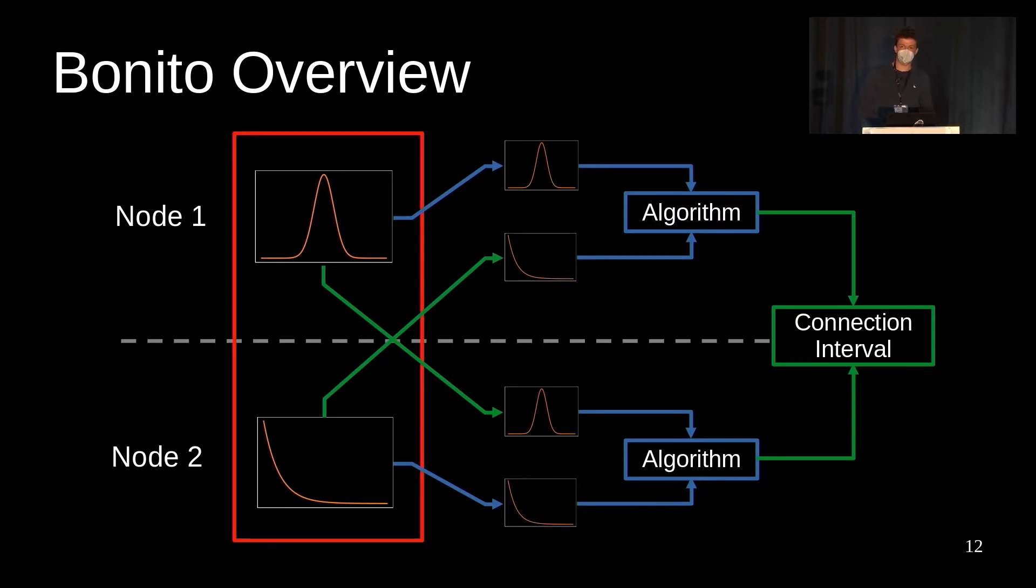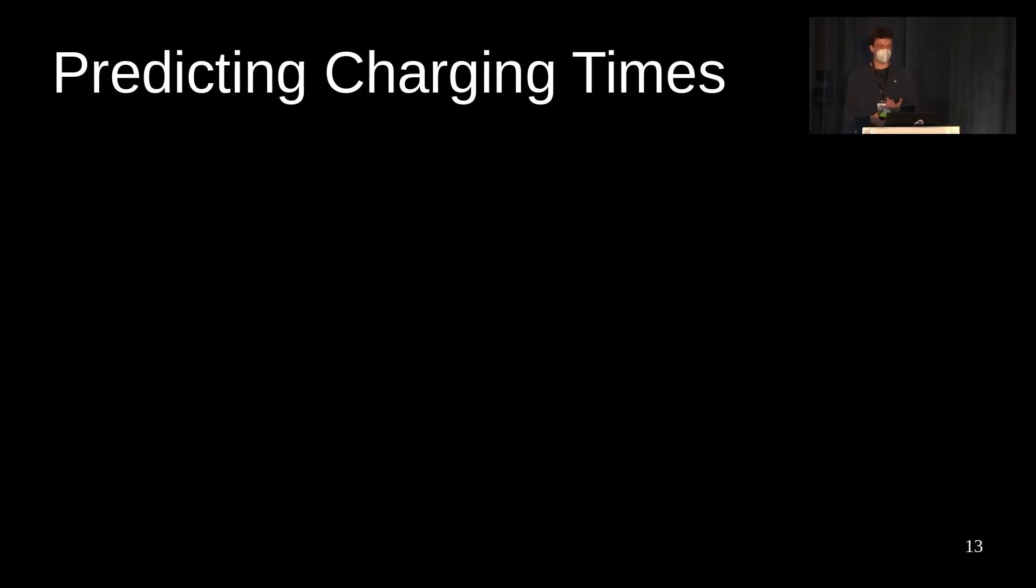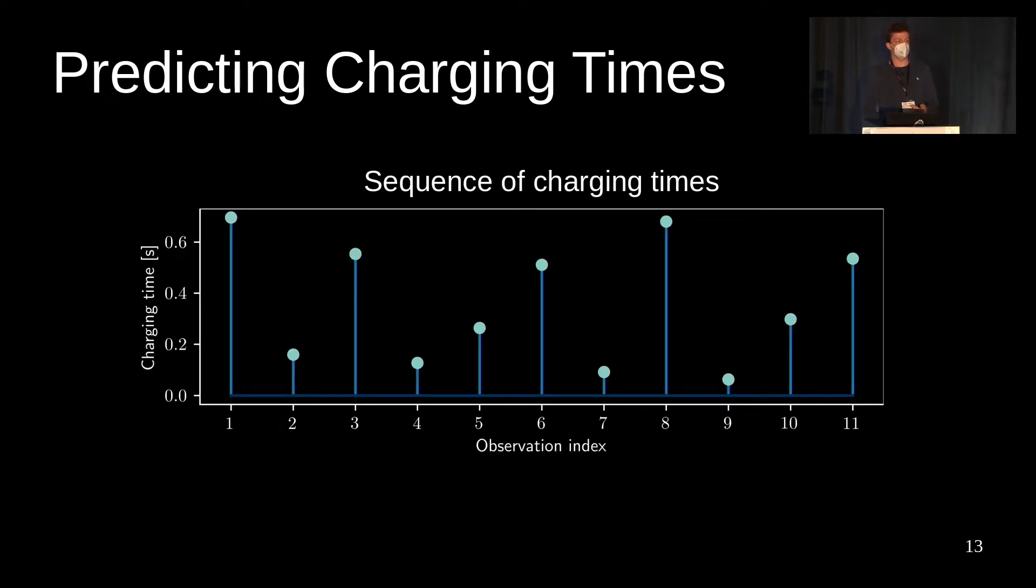Let's look at this protocol step by step, starting with the statistical model. The connection interval must be larger than the charging times of both devices, otherwise one of them will not be able to make it and communicate. That means that the devices need to predict their next charging time. But this turns out to be quite challenging. Here's the sequence of charging times from a kinetic harvesting node, and as you can see it's varying randomly, so it will be very difficult to predict the next value exactly.